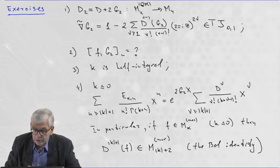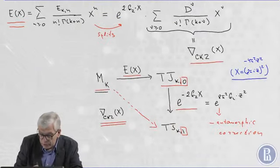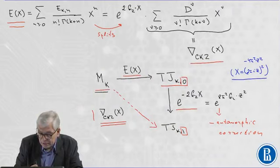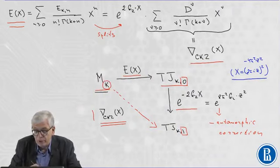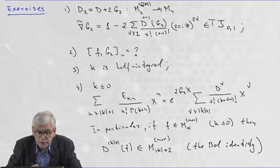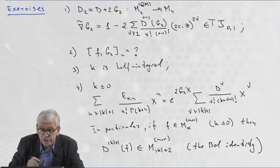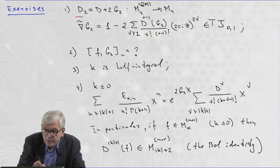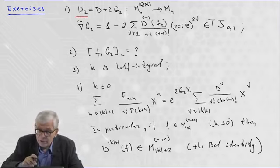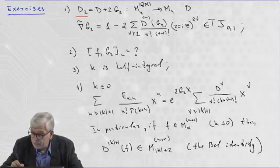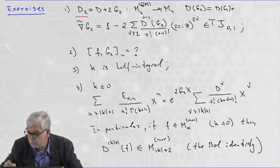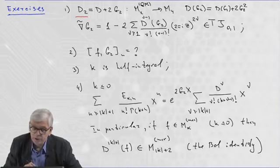First of all, we can start the Coin-Kuznetsov-Zagier operator not from the weight K. I mean, not from the modular form, but we can start this operator from the quasi-modular form G2. For that, we have to start our iteration with the differential operator, with the modular differential operator D2, which transforms the quasi-modular Eisenstein series G2 into the space of modular form of weight K.